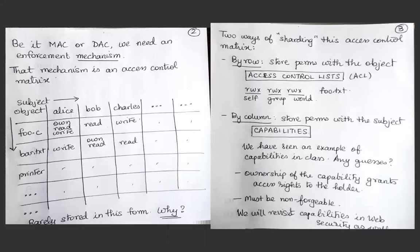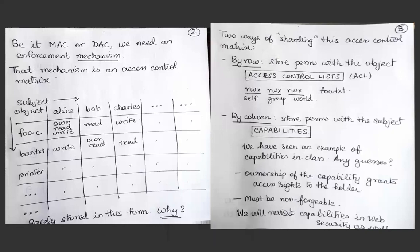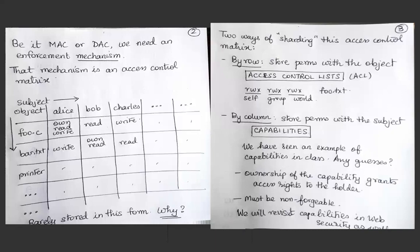We've actually seen an example of capabilities already. The key property is that whoever owns the capability is granted access rights to that object, and the capability must be non-forgeable. We will also revisit capabilities when we study web security, where it appears in a different context but is capabilities in disguise. The answer to what example we've seen is: file descriptors — file descriptors are an example of capabilities.